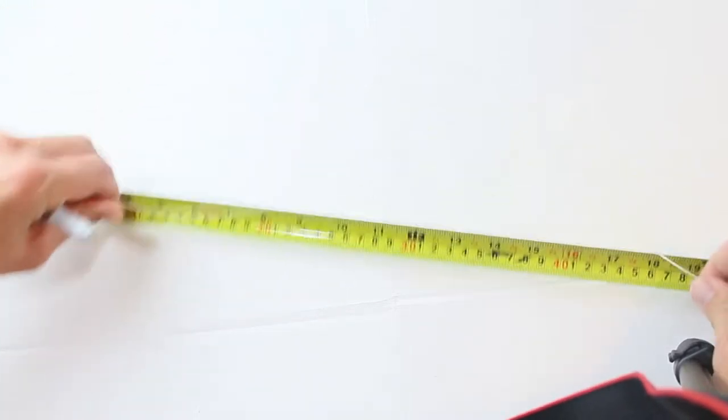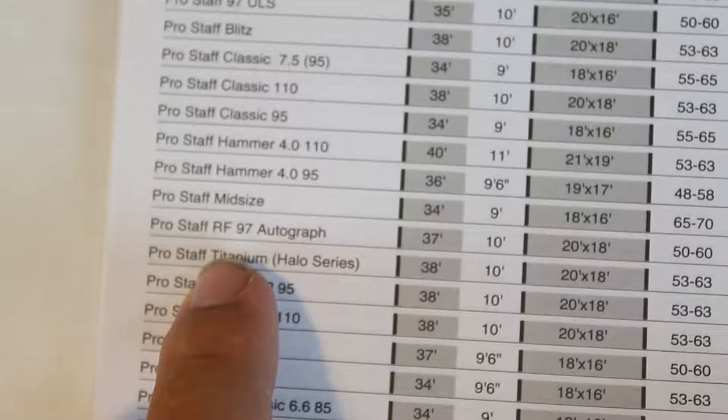We're stringing the Prostaff 97 Autograph Racket, and from our Stringer's Digest, it shows that we need 37 feet of string for the one-piece method, and that 10 is the short side.